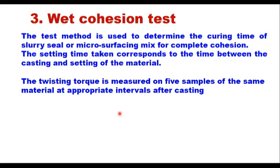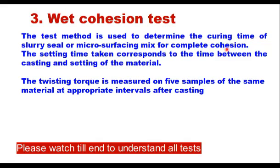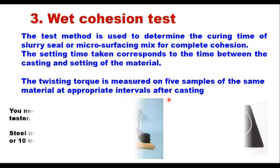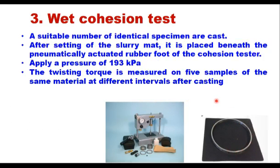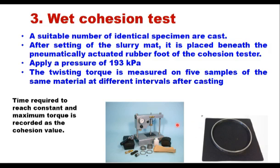The third test is the wet cohesion test, used to determine the curing time of slurry seal or microsurfacing mix for complete cohesion. The setting time corresponds to the time between casting and setting of the material, and the twisting torque is measured on 5 samples at appropriate intervals after casting. A cohesion tester is used with a steel mold of either 6 mm or 10 mm thickness placed on a bitumen felt base. A pressure of 193 kPa is applied via a pneumatically actuated rubber foot and the twisting torque is measured at different intervals. The time required to reach constant and maximum torque is recorded as the cohesion value.